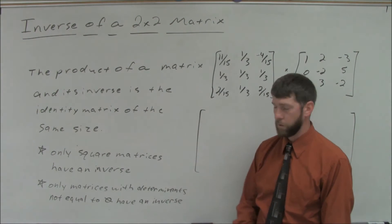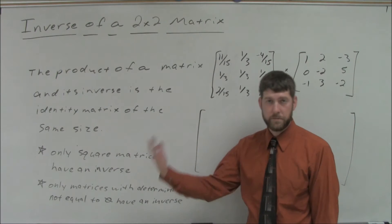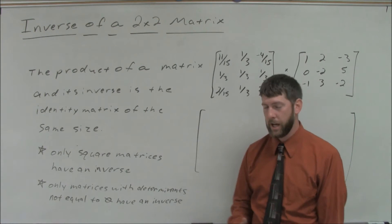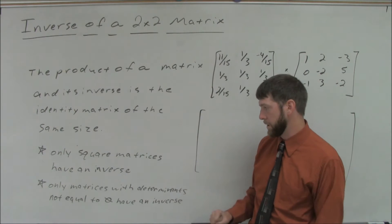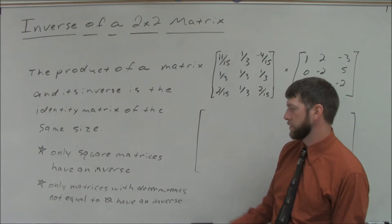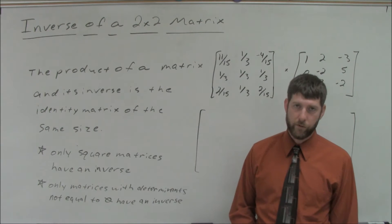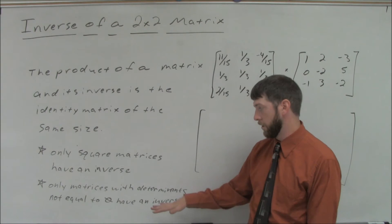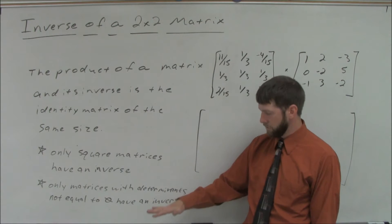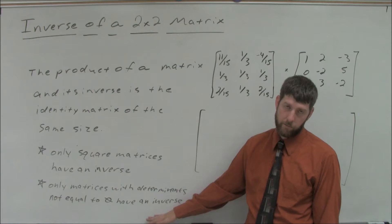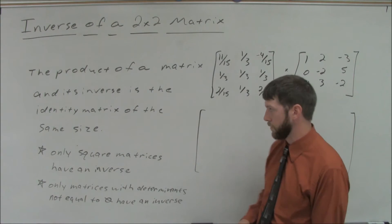A couple of notes: only square matrices have inverses. That comes back to how we actually calculate an inverse matrix. And only matrices with determinants not equal to 0 have an inverse. Since only square matrices have a determinant, and the determinant has to be not 0, it can only work for square matrices.